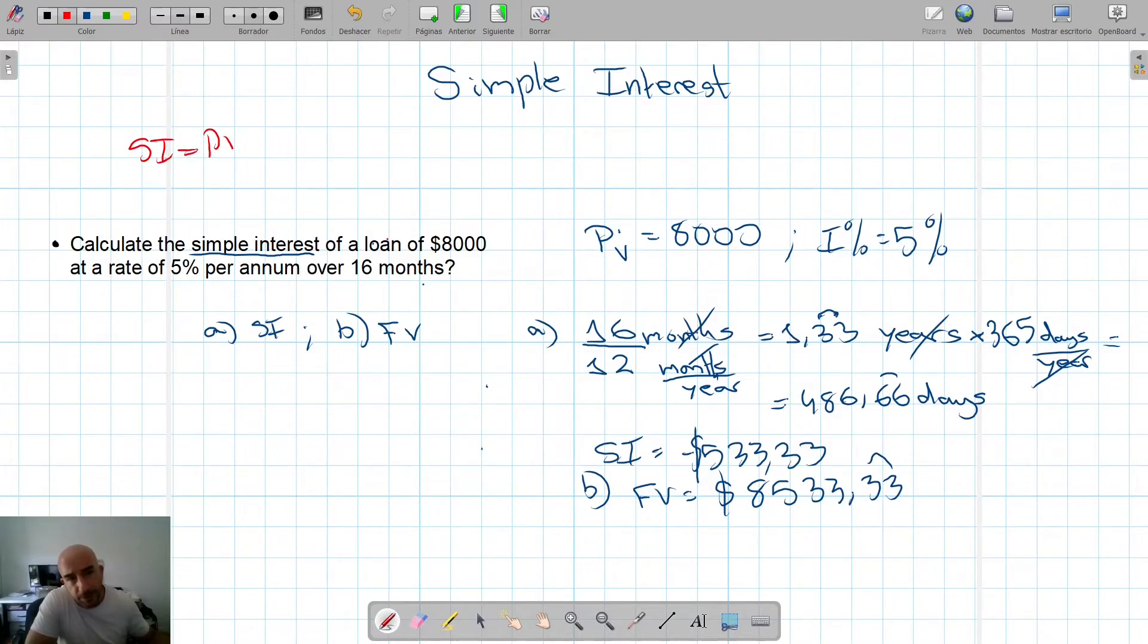SI equals PV times I divided by 100 times N. N in the formula is years. So A, SI would be 8,000 times 5 divided by 100 times, and now we would have to do the same conversion, would be 16 divided by, in this case, as we only wanted in years, 16 divided by 12. So if you do this, you already obtain 533.33 dollars.